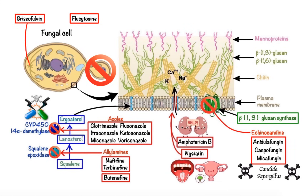Flucytosine works at the nucleus level, where it is converted into 5-fluorouracil and then to other active metabolites that inhibit fungal RNA and DNA synthesis. Thank you for watching — I hope you found this video useful, and as always, stay tuned for more.